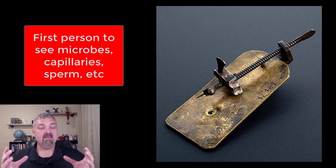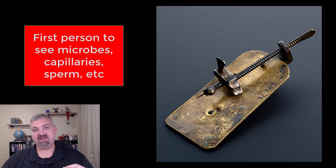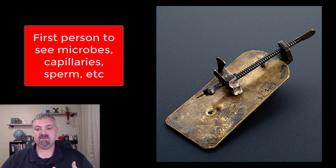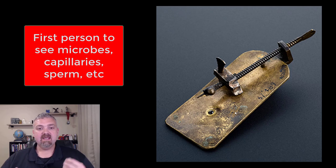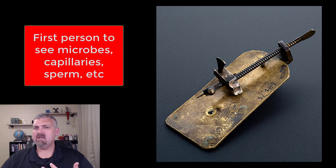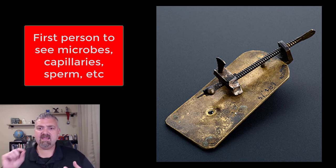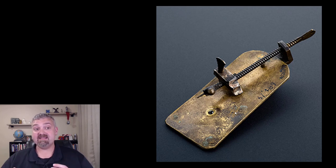Imagine being this man — every time he looked through his microscope, he was the first human being to see it. We had no idea what was going on around us until he showed up. He first saw things like animals, or what he called animalcules or wretched beasts, in rainwater. He loved looking at tooth scrapings. He was the first person to ever see a human capillary or capillary beds. He discovered human sperm. Anytime he looked through his microscope, he was probably the first human being to ever see it — and that's pretty amazing.